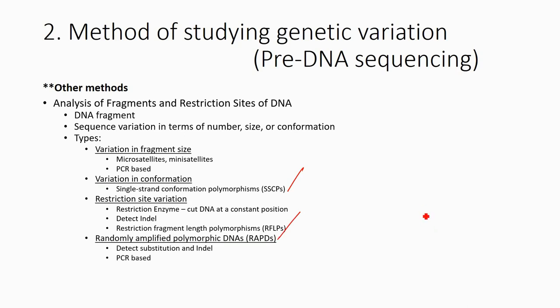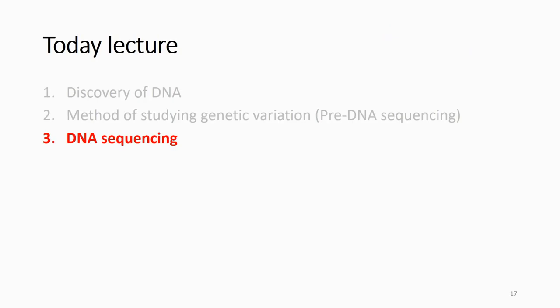All of these methods — RAPD and the others — do not tell you what is really different at the nucleotide level: A, T, C, G. So the next development was to develop a technology that could actually read each nucleotide.